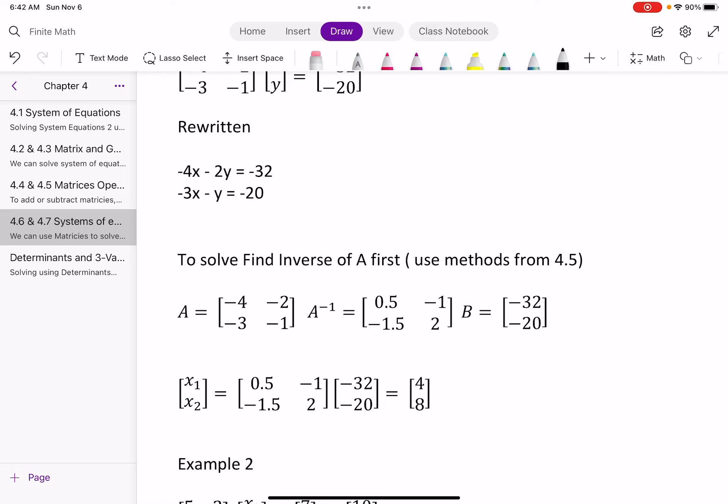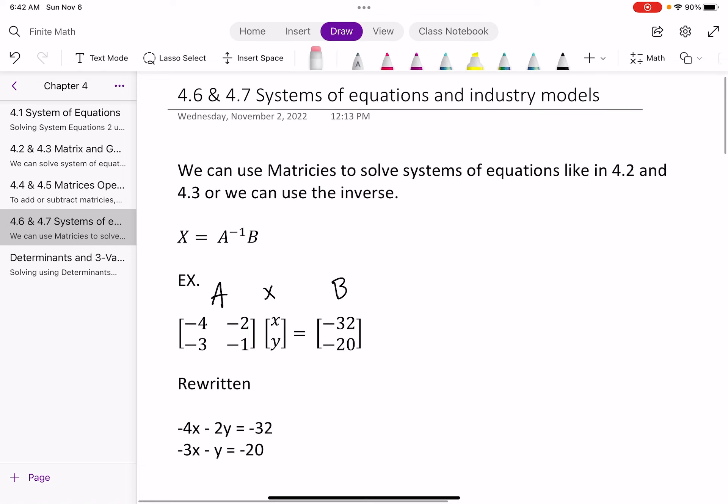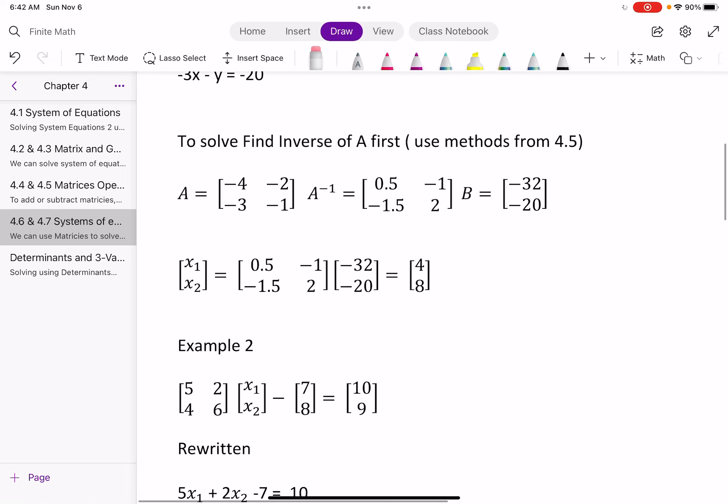And I basically use the formula, x equals the multiplication or the product of the matrix of the inverse matrix of A times B. So I got my matrix inverse A here. And I have my B here.